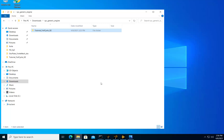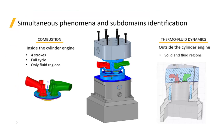Hi, with this video we're going to show you how to perform a conjugate heat transfer analysis of a single cylinder diesel engine case. As an example, we will be using one of our tutorials, the generic full cycle diesel engine case, which you see here represented in the middle.